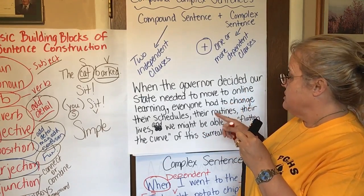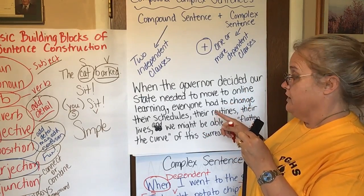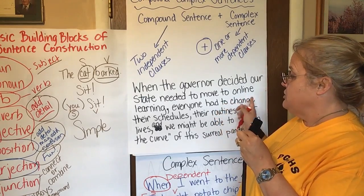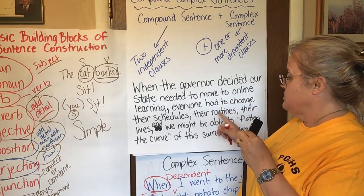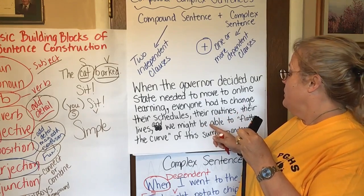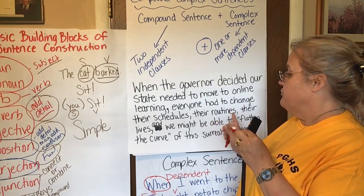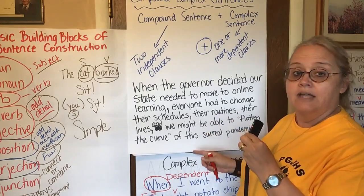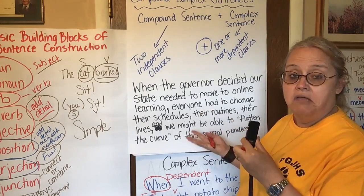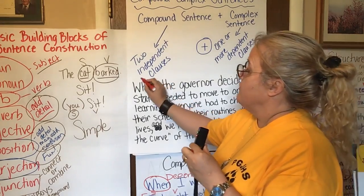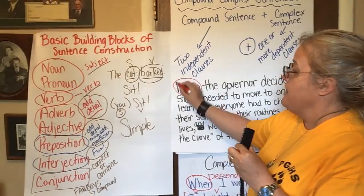So let's read the sentence first: 'When the governor decided our state needed to move to online learning, everyone had to change their schedules, their routines, their lives, and we might be able to flatten the curve of this surreal pandemic.' Okay, so right away I've got the word 'when' — that's one of my keywords.